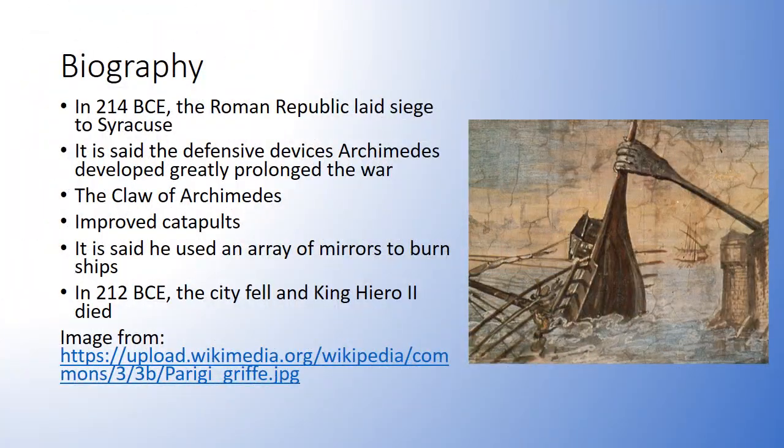In 214 BC, the Roman Republic, led by General Marcellus, laid siege to the city of Syracuse. In order to fend off the incoming Roman soldiers, Archimedes invented and improved multiple defensive devices. These included the invention of the Claw of Archimedes, improved accuracy of catapults, and the use of an array of mirrors to burn ships, which may be mere legend. However, in 212 BC, the city fell and King Hiero II died.